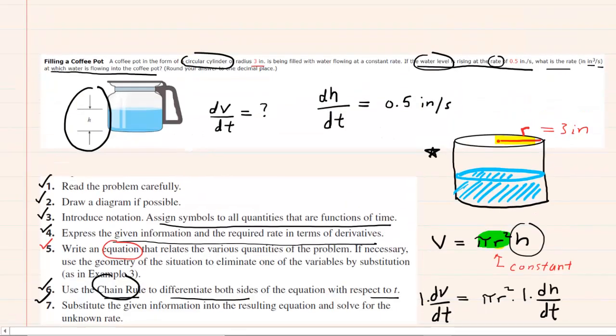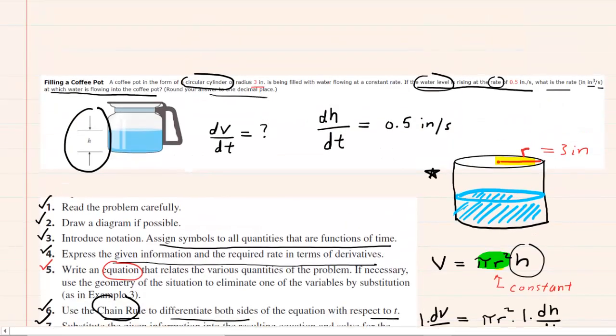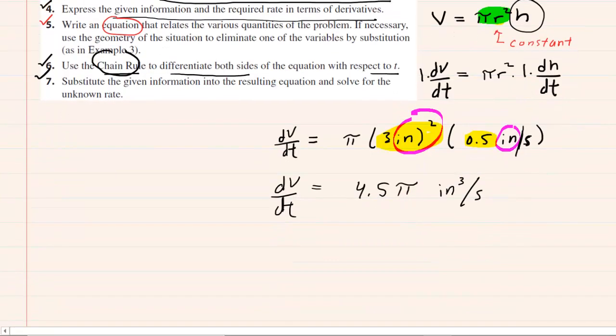This question wanted us to round our answer to one decimal place. So in fact, let's multiply 4.5 by pi on a calculator, and we're going to get approximately 14.1. And again, that would be in inches cubed per second. So this is the correct answer to the question.